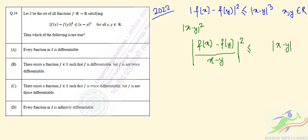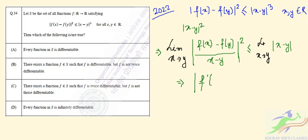Now if we take the limit as x tends to y on both sides of the equation, the left-hand side becomes |f'(x)|², and the right-hand side tends to 0. So we get |f'(x)|² ≤ 0.